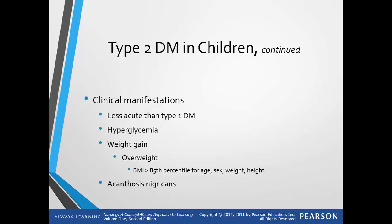Clinical manifestations of type 2 are less acute than in type 1 diabetics. They can include a range of symptoms related to hyperglycemia. It may include weight gain, being overweight with a BMI greater than the 85th percentile for age, sex, weight, and height, and insulin resistance. Typically they have skin changes known as acanthosis nigricans, where the skin is velvety in texture and brownish-black in color with hyperkeratotic plaques.